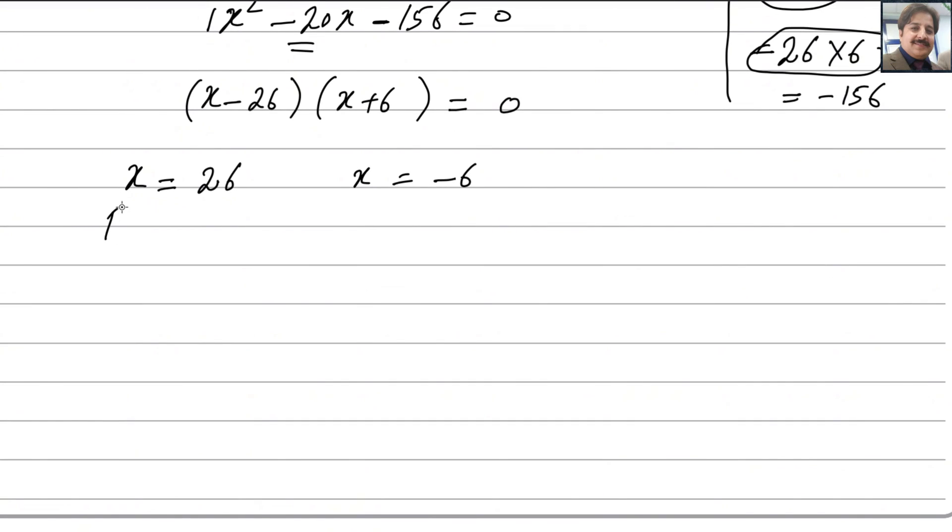We will reject it after checking, but make sure which one is correct answer in this type of question. You have to check your answers. All answers of x are not our solutions. Reject this one and accept this one. So this will be our solution. Hopefully you understand this. Question number 3, the first part is done.